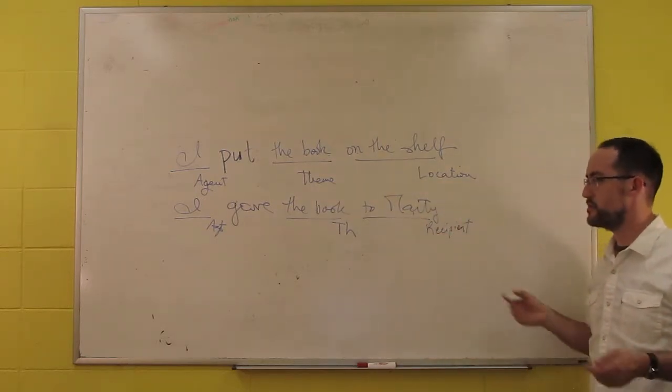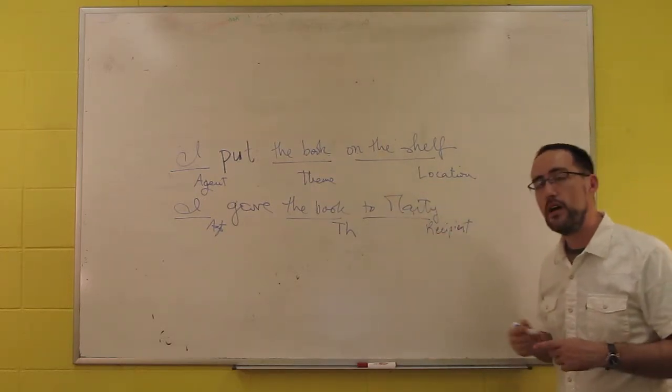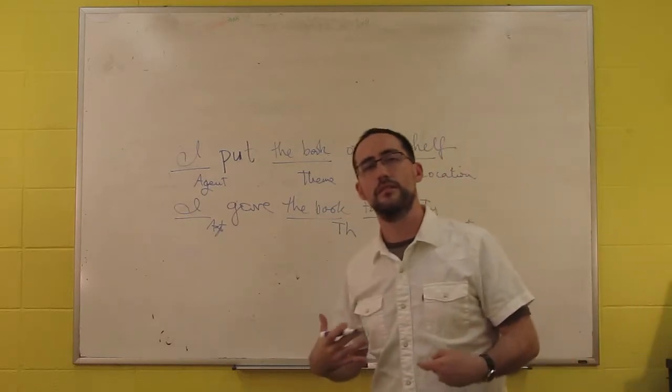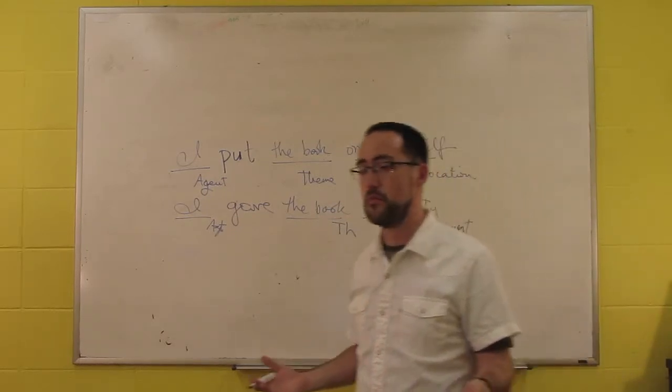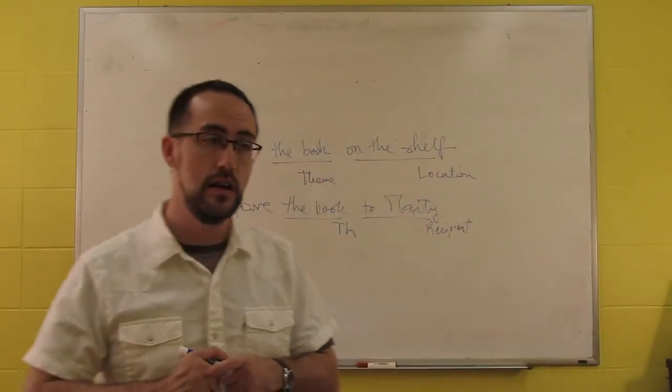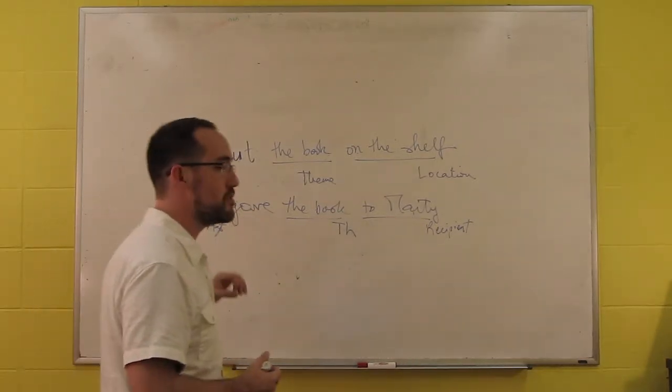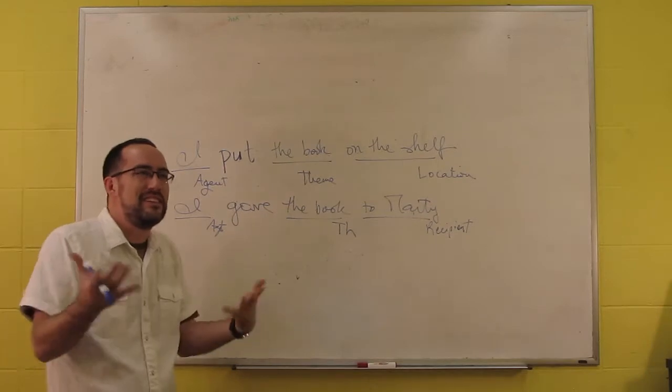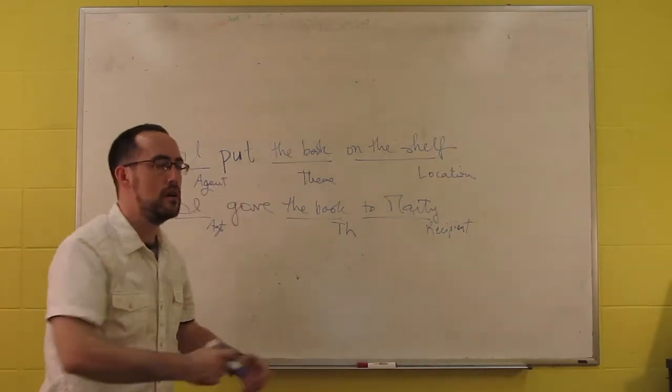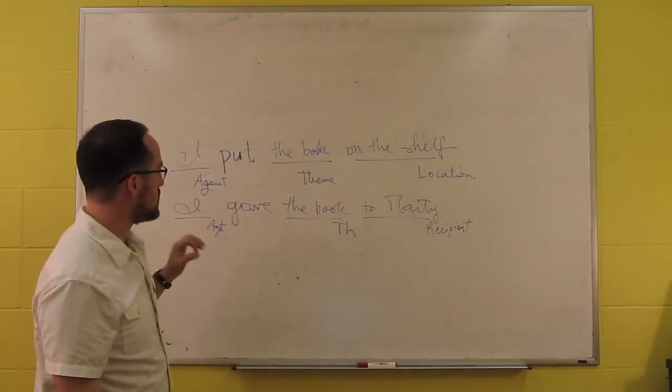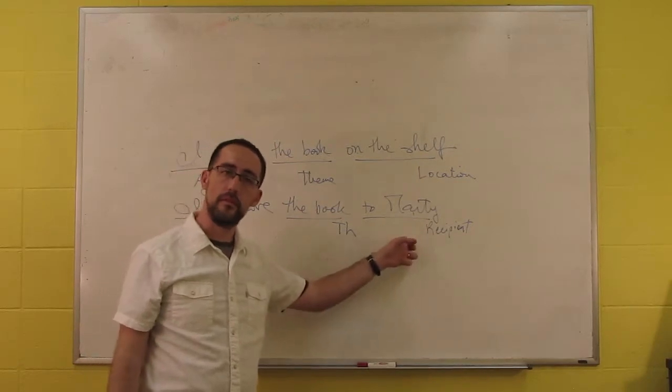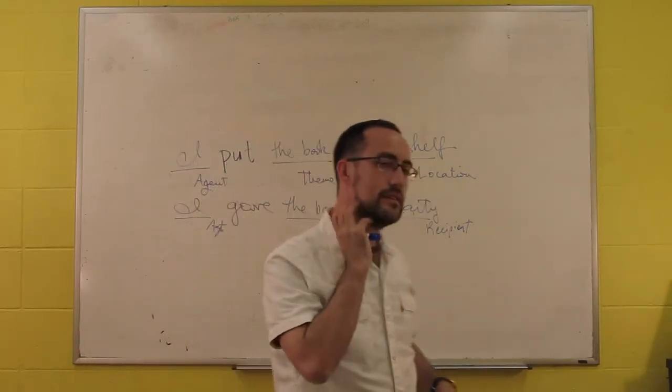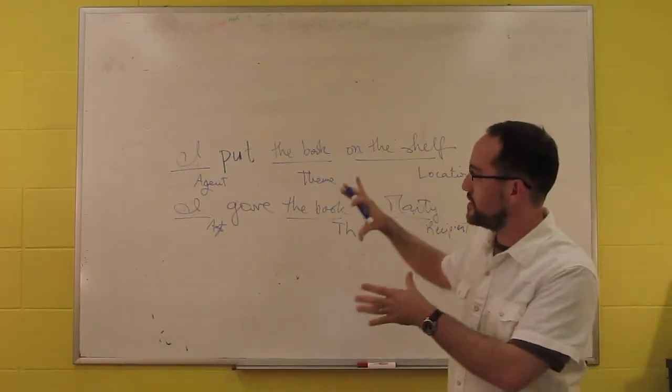So here, the recipient is the oblique, but there are verbs where the recipient is the object, the most obvious being the verb receive. So if we say that Marty received the book, he's not really the agent of the receiving event. I mean, it's not something that you do. He's the recipient, and so it helps us understand these distinctions.